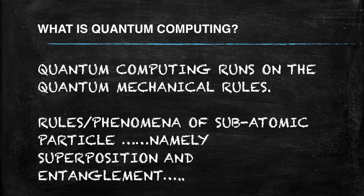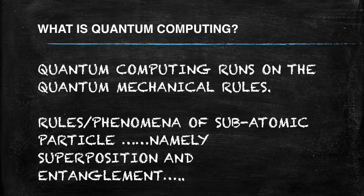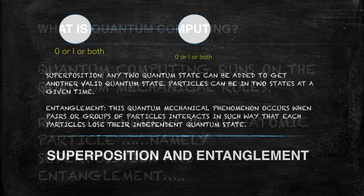Coming back to quantum computing: quantum computing runs on quantum mechanical rules. There are two rules of subatomic particles that have been used in developing the mechanism of quantum computing — one is superposition and the other is entanglement. Both concepts come from quantum physics and have been implemented in designing quantum computing.